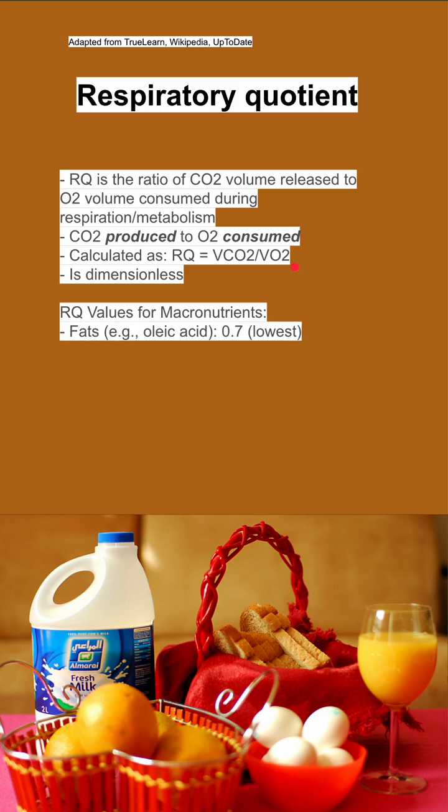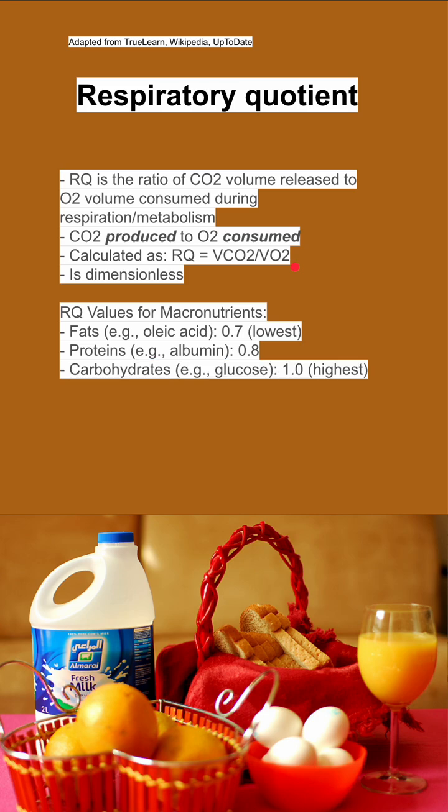There are some RQ values for macronutrients. Fats have the lowest respiratory quotient. Proteins are in the middle at 0.8, and carbohydrates like glucose are the highest at 1.0.